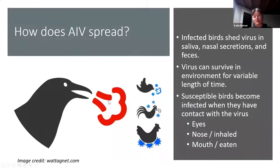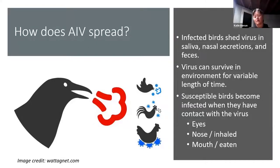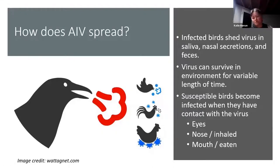Infected birds shed the virus in their saliva, nasal secretions, and feces. The viruses themselves can survive in the environment for variable lengths of time depending on conditions — cool and wet environments can harbor live virus for up to several weeks. More saltwater and much colder temperatures will kill the virus, as will hotter and drier weather. Earlier this summer, when we had that cold wet spring, it was kind of the perfect environment for allowing the virus to live outside of the host. Susceptible birds become infected through their eyes, nose, inhalation, but most frequently through fecal-oral transmission.